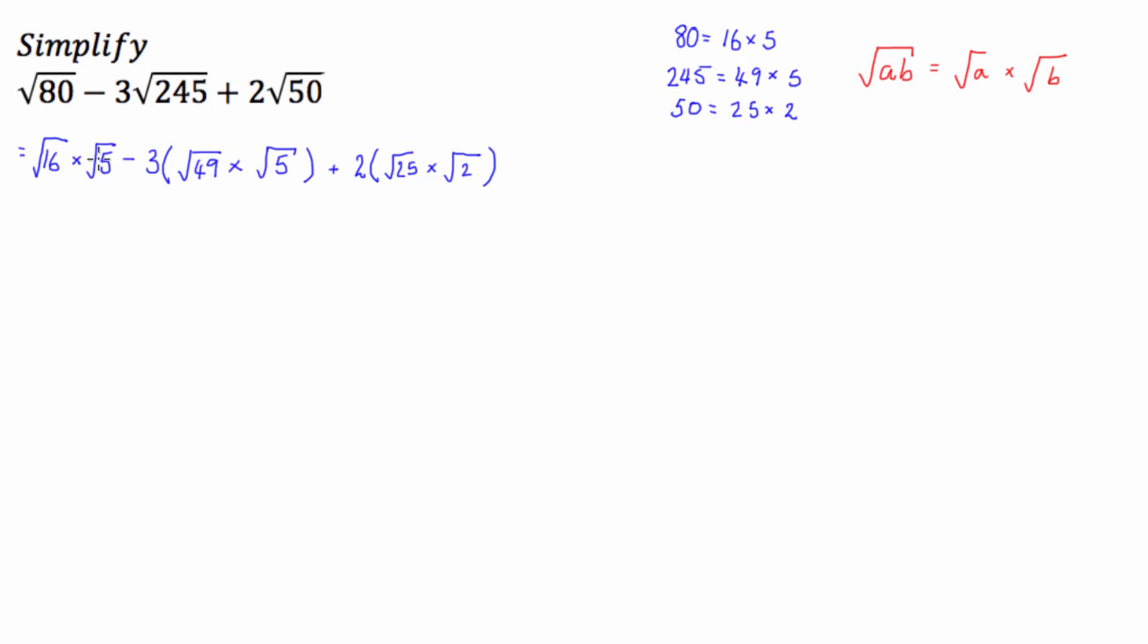Cool, so you can almost see how this is going to take shape now. We know that the square root of 16 is 4. So that's going to be 4 times the square root of 5 or just 4 root 5. Now, we know that the square root of 49 is 7, so this is going to be minus 3 times 7 times square root of 5.